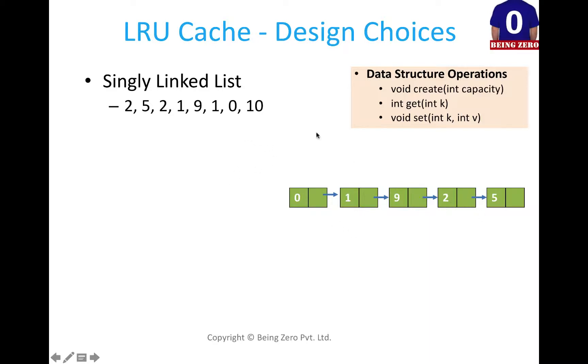Now when 10 comes, what we do is we search for 10. It is not there in the cache, and the cache has reached its full capacity. If this comes, we know the least recently used element will always be the last element. So for 10, what we have to do is remove the last element and insert 10 in the beginning. Now you see the optimization here.